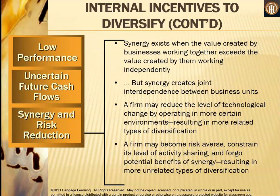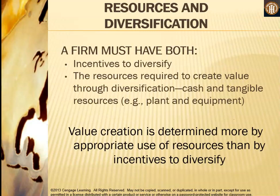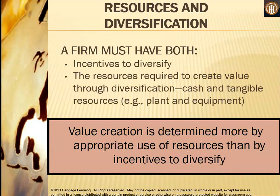Synergy exists when the value created by businesses working together exceeds the value created by them working independently. But synergy creates joint interdependence between business units. A firm may reduce technological change by operating in more certain environments, resulting in more related types of diversification. A firm may also become risk averse, constrain its level of activity sharing, and forego potential synergy benefits, resulting in more unrelated types of diversification. As it relates to resources, a firm must have both the incentives to diversify and the resources required to create value — such as cash and tangible resources. Value creation is determined more by appropriate use of resources than by incentives alone.